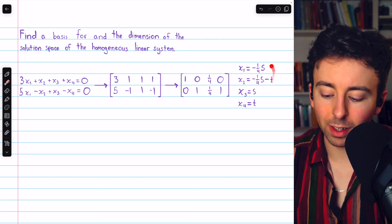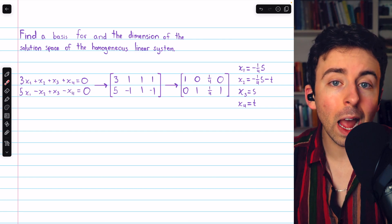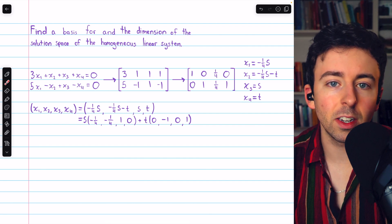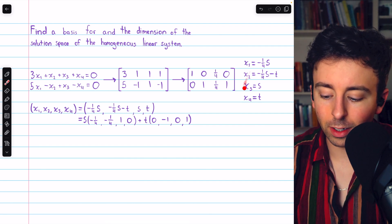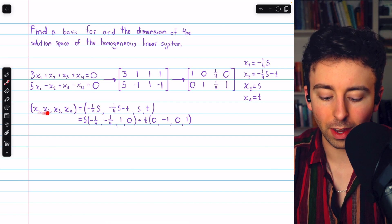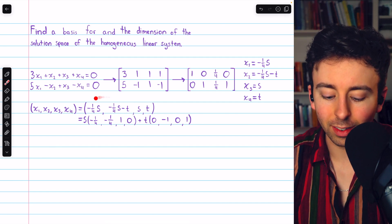We've got a parametric set of equations describing the solution space. So, what do the solutions to this homogeneous linear system look like? Well, they look like this, which in vector form, we have four unknowns, x1 through x4, looks like this.